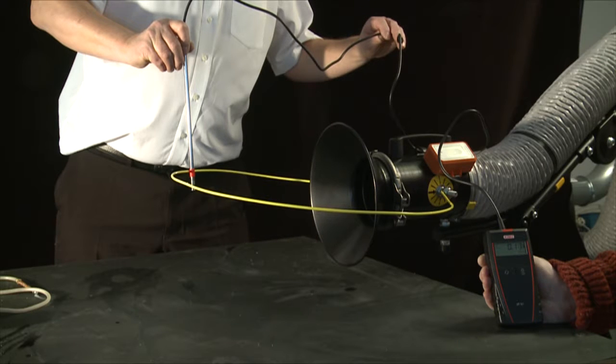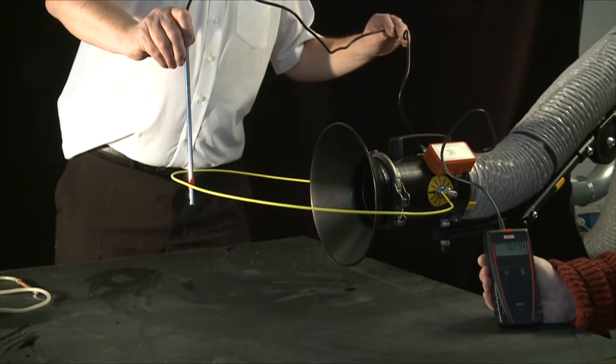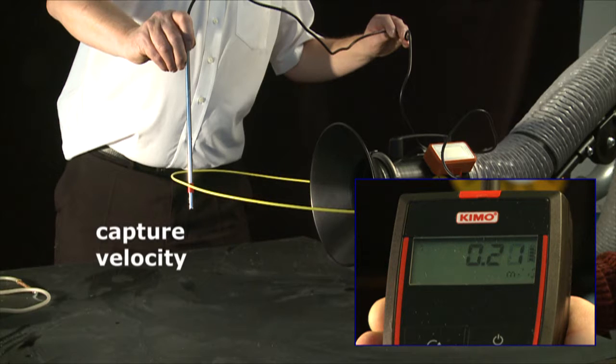An anemometer is used to measure air velocity at the edge of the capture zone. In this example, the velocity at the edge is around 0.2 meters per second, and this is known as the capture velocity for the process.